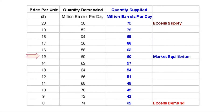Let's look at an example — the price of oil. In our table, the market price for a barrel of oil is $15. Anything higher than this and there would be excess supply; anything lower, excess demand.